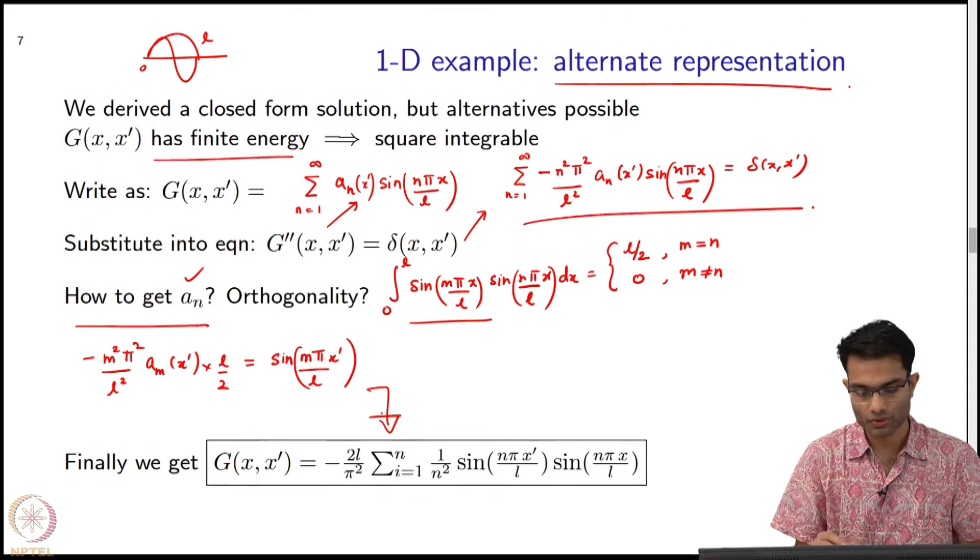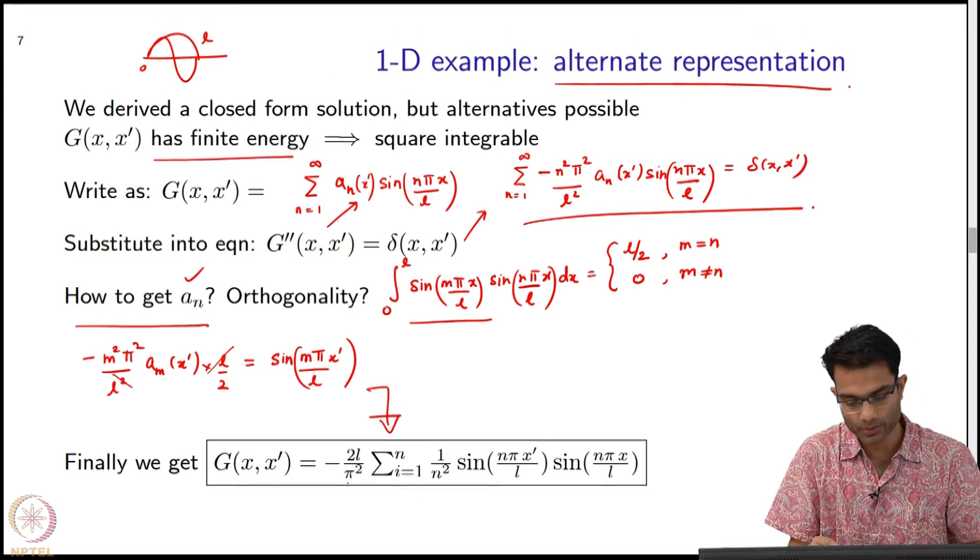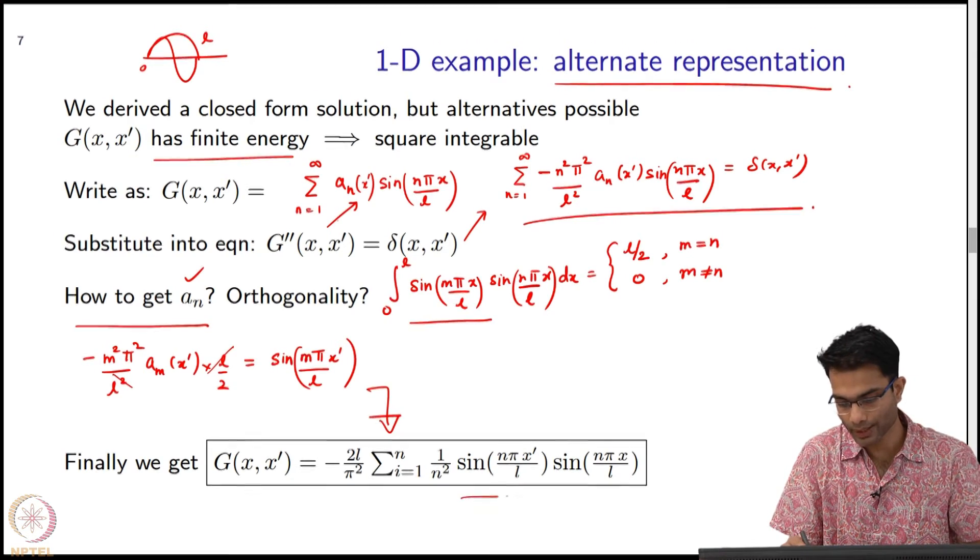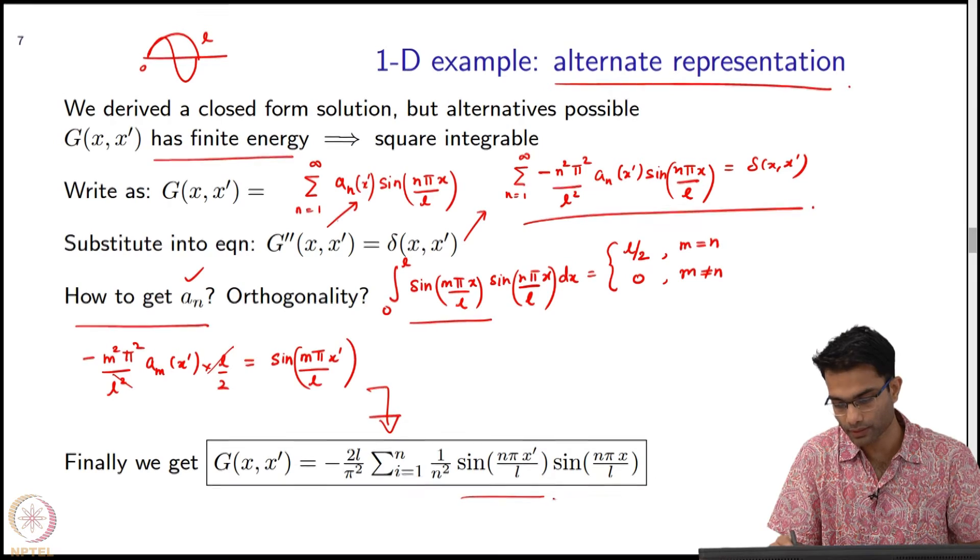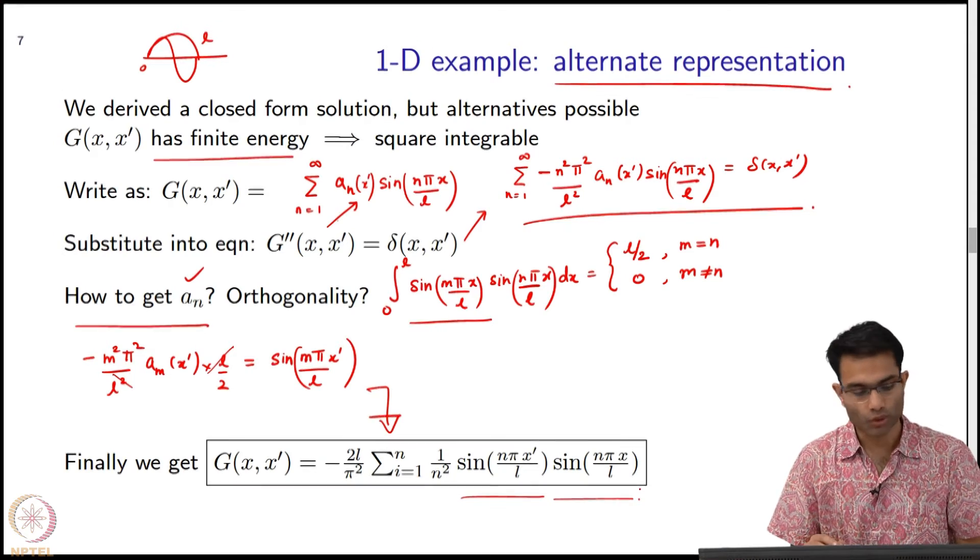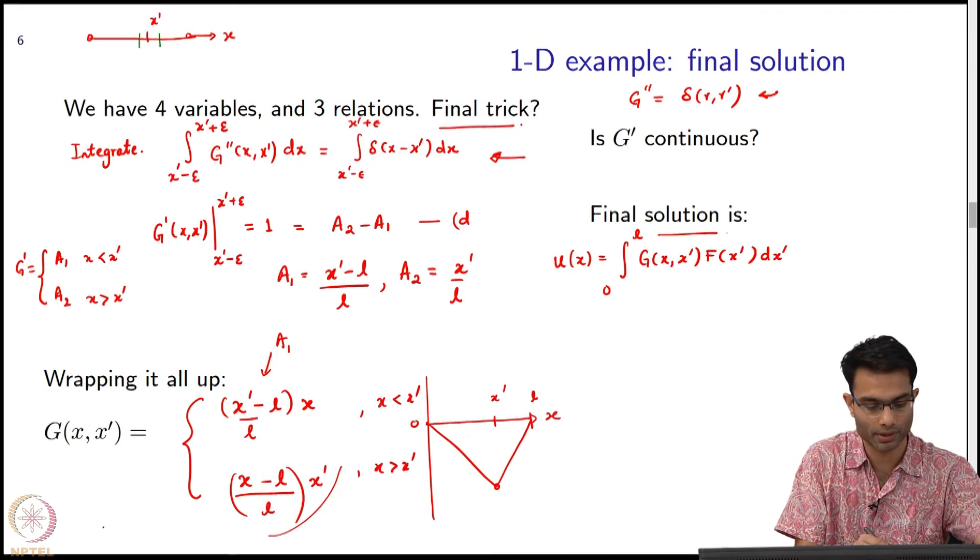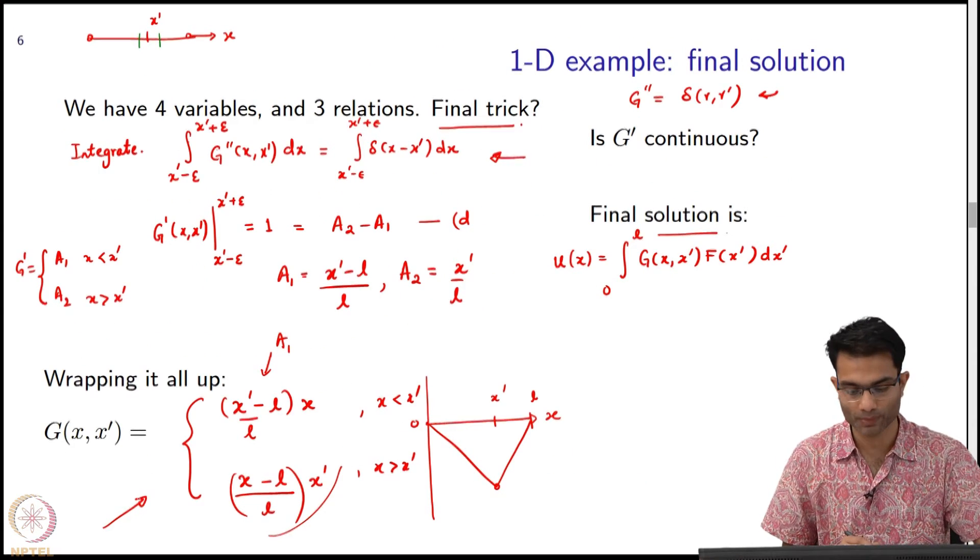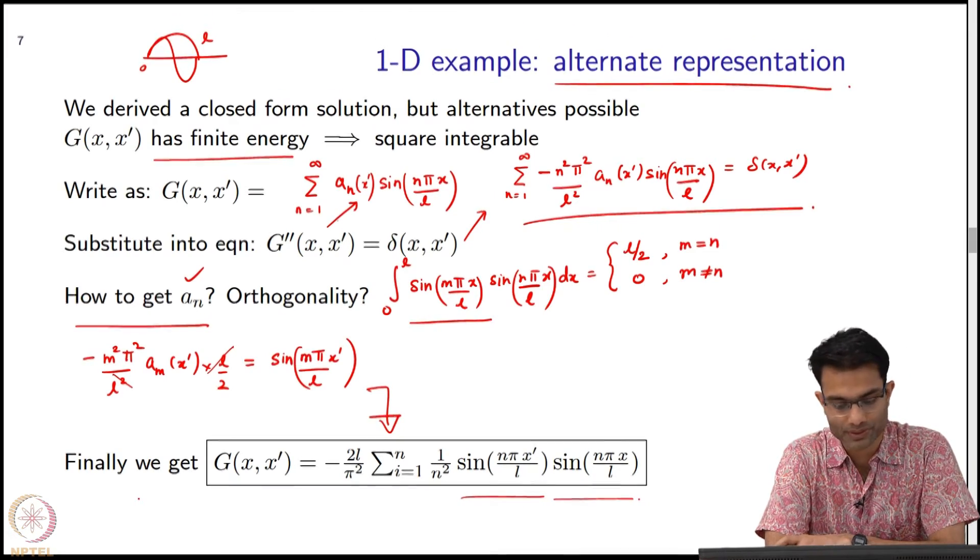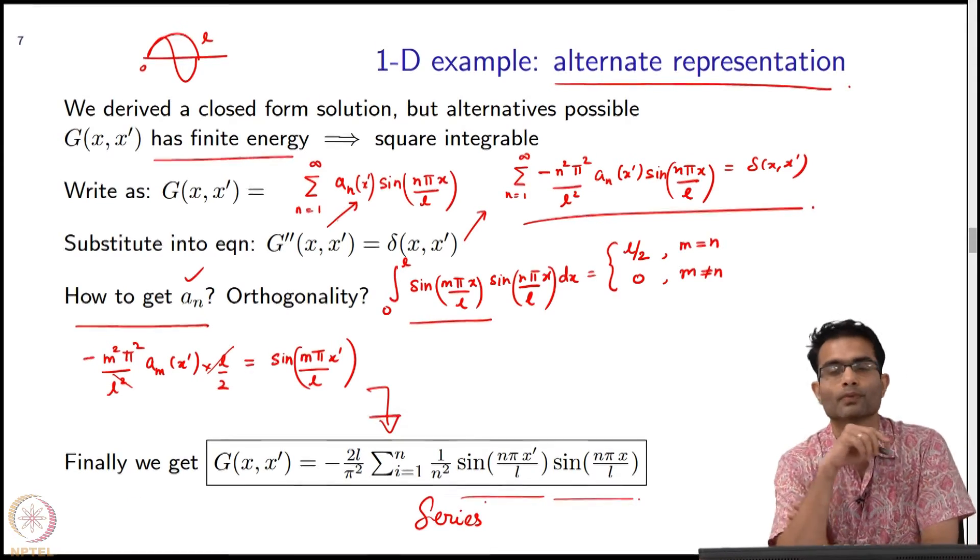This is the final relation. One of the L's got cancelled, so that's why this is 2L/π² times 1/n². I have sin(nπx/L) and sin(nπx'/L). Now, you might ask why should I choose this form? This looks so much more complicated than my previous form. That looked much simpler. How do you know which form to choose?